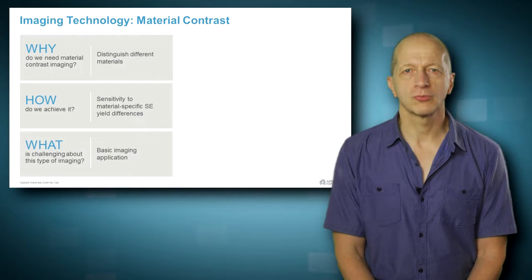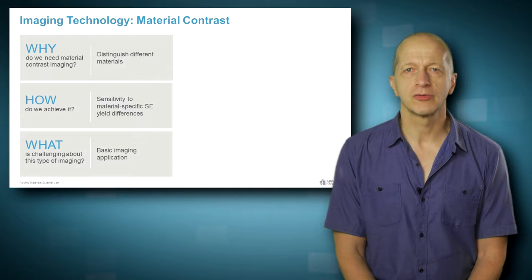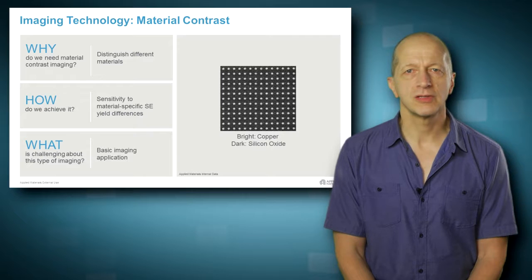Material contrast is caused by the fact that different materials interact differently with the electron beam, so the emission yield varies by material. In the example we can see that silicon oxide has lower yield, thus looks darker than the high yield copper, which is bright.